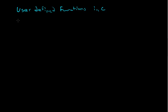In this video, I'm going to go over user-defined functions in C. First off, what do we know about functions from math? A function in math is usually something like y equals x squared. Whatever you put into x, you square it and you get y. This is the same as f of x equals x squared, so y equals f of x.